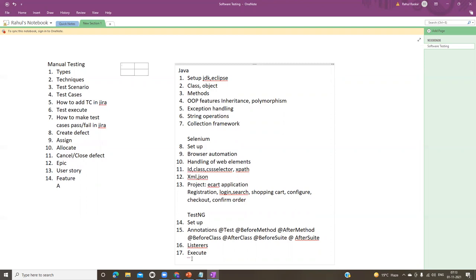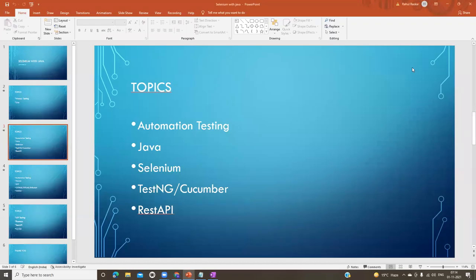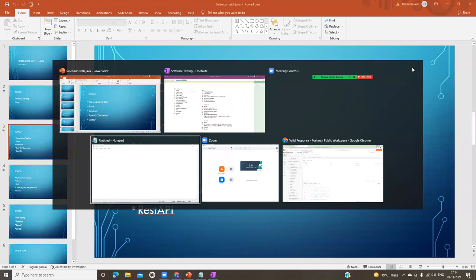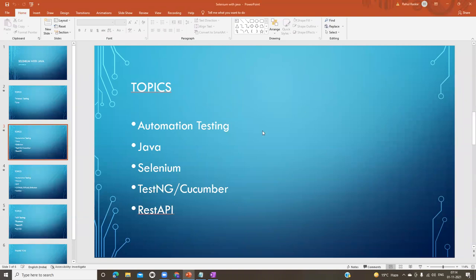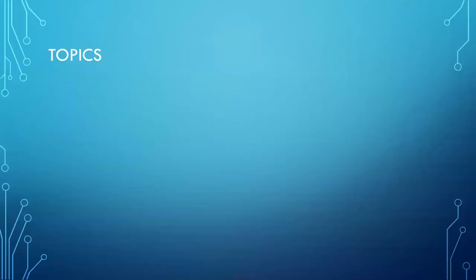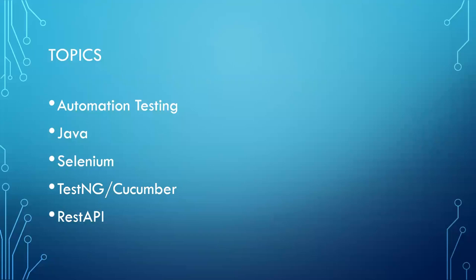In Cucumber also, same — we will see how to do setup of Cucumber, which annotations are there, and how to map that Gherkin file with the methods and how to execute the script. So this covers TestNG and Cucumber. Then for REST APIs we will see what is API in the next slide.